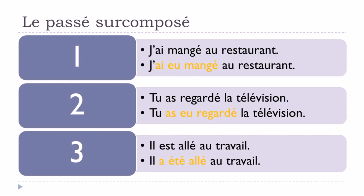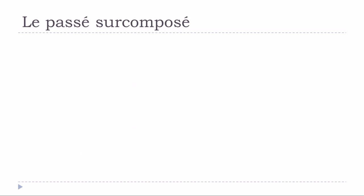For the last example I wanted to use a verb — aller — that requires être in the passé composé. Passé composé: il est allé au travail. Here être is at the present form. For the passé surcomposé, the participe passé allé doesn't change, but this first part becomes the verb être at the passé composé form.